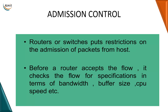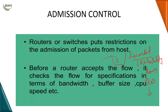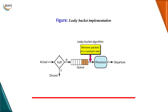Then the last technique is admission control. You do not have the capacity to accommodate so many packets, but you are still trying to take packets — what will happen? Those packets will be discarded. When you are discarding or losing packets you are reducing the reliability, and when reliability goes down your quality of service also goes down. So we provide a restriction on admission of flow of packets for which the resources are not available — that is called admission control. Routers and switches put restrictions on the admission of packets from the host when the resources are not available.